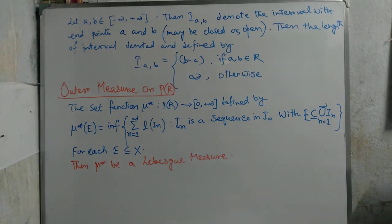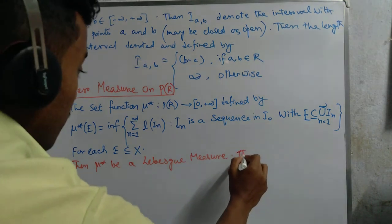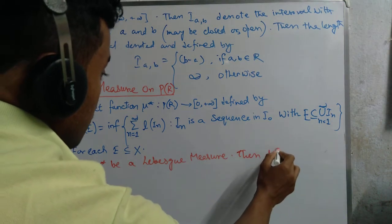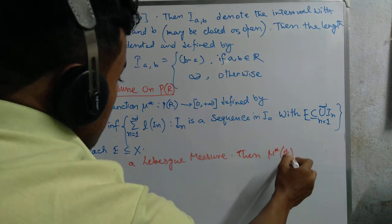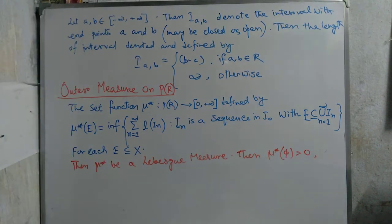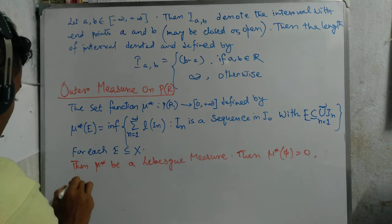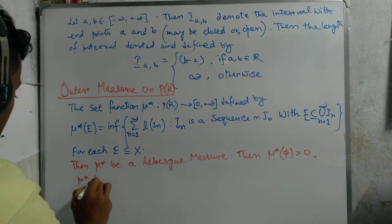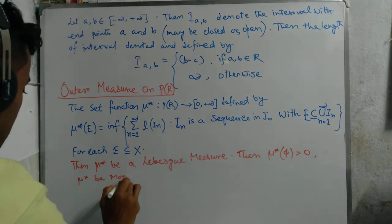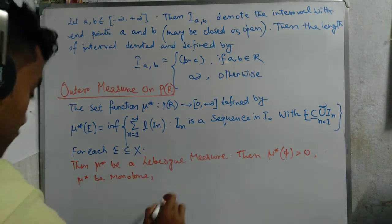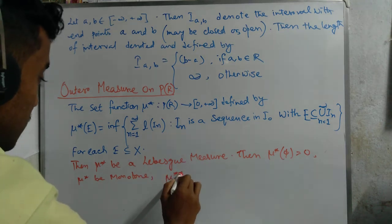Then what happens? First, mu star of phi equals 0. Second, mu star is monotone. Third, mu star is countably subadditive.